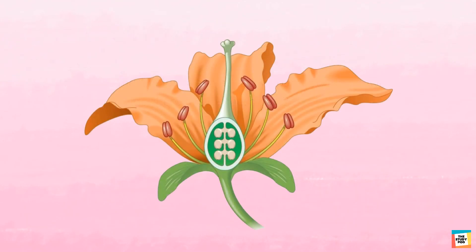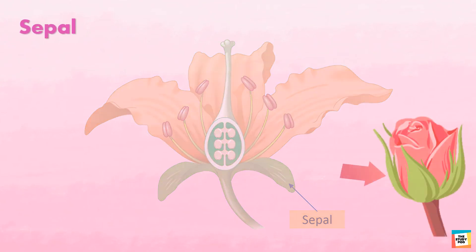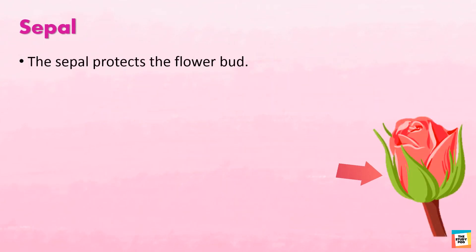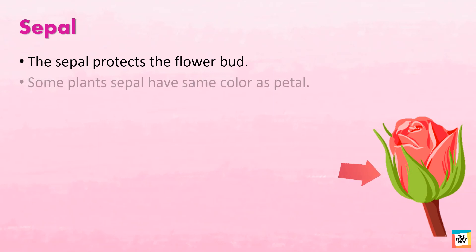This is the cross section of a flower. This part is called the sepal. The sepal protects the flower bud. Some plants' sepals have the same color as the petal.